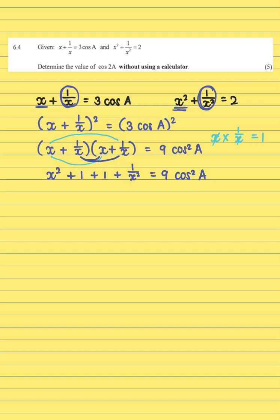Right, now we are on the right track because now we see that we have the x squared and the 1 over x squared that they were talking about on this side. And what are they saying? x squared plus 1 over x squared is equal to 2. So what I can actually do is I can replace the x squared and the 1 over x squared over here with 2 because they did tell us that x squared plus 1 over x squared is equal to 2. So that's what I'm going to do next. I'm going to now replace x squared plus 1 over x squared with 2. But then I also had a plus 1 plus 1, which is another 2. And that is equal to 9 cos squared A.